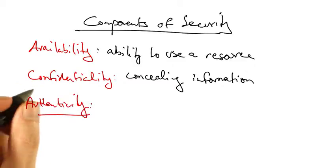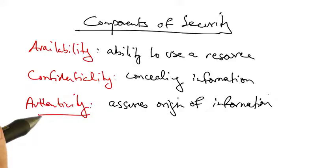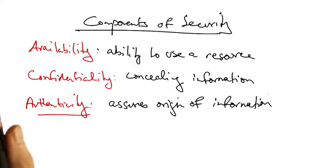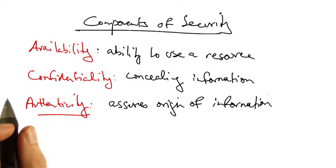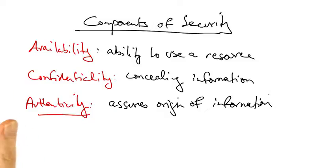Another component of security is authenticity. Authenticity assures the identity of the origin of a piece of information. So for example, if you're reading a particular news article, you may really want to know that that article came from the New York Times website as opposed to from some other place on the internet.